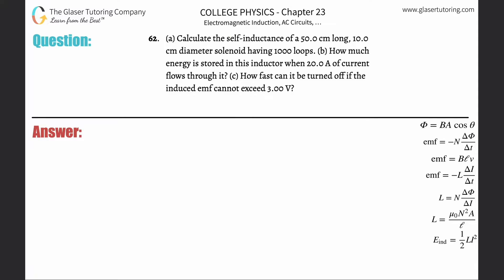Number 62, letter a: Calculate the self-inductance of a 50 centimeter long, 10 centimeter diameter solenoid having 1000 loops. Okay, so letter a. We have a solenoid formula on the right-hand side. It says that the self-inductance occurring through a solenoid will be equal to the permeability of free space multiplied by the number of turns squared, multiplied by the cross-sectional area of the solenoid, divided then by the length of the solenoid.